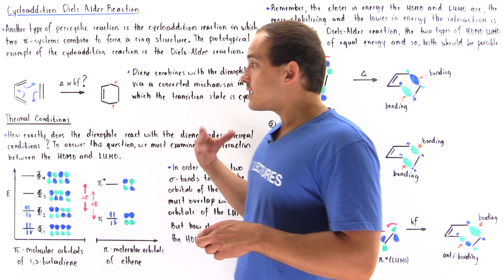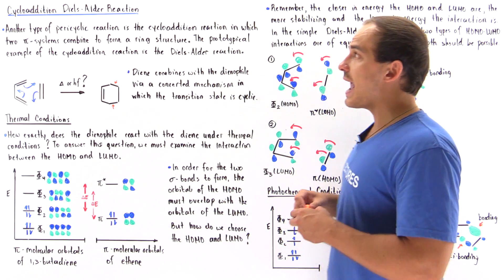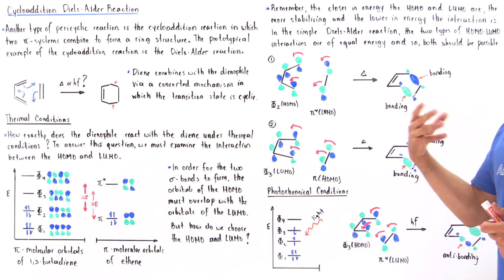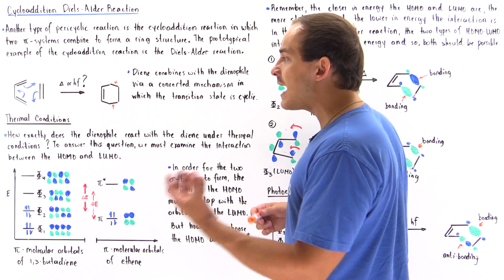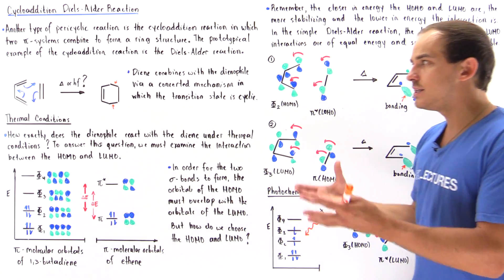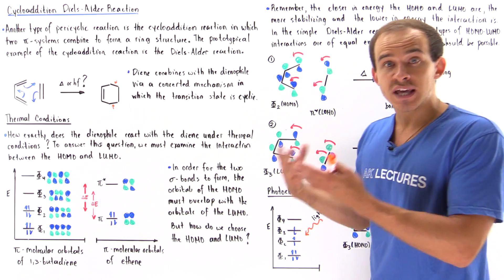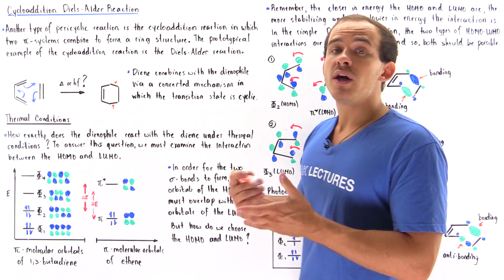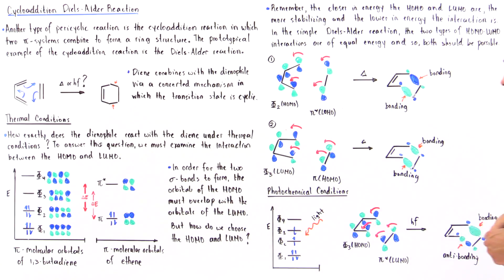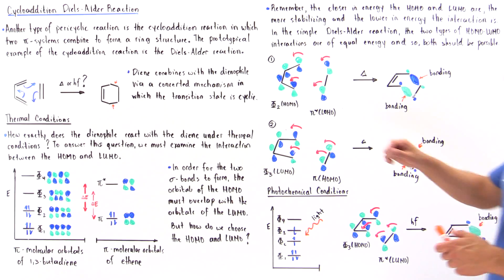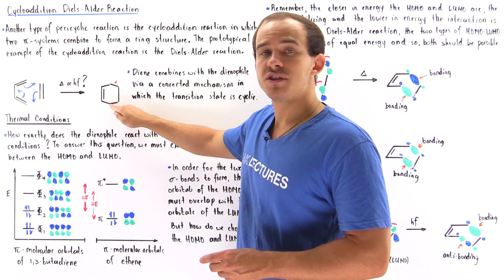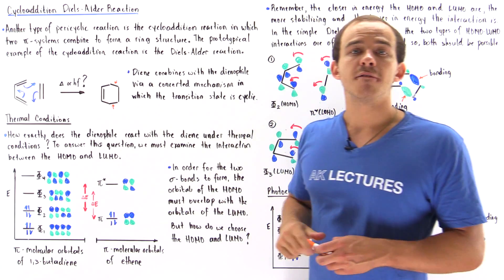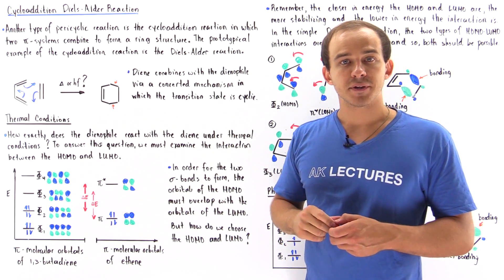So for the Diels-Alder cycloaddition reaction, only thermal conditions actually work. Photochemical conditions will not work because we cannot form both bonding interactions simultaneously — one bond would form but the other would not, so the concerted step cannot occur under photochemical conditions.